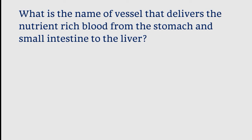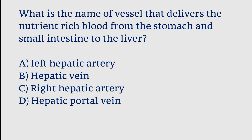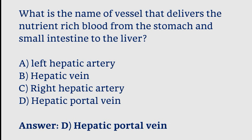What is the name of the vessel that delivers nutrient-rich blood from the stomach and small intestine to the liver? Options: left hepatic artery, hepatic vein, right hepatic artery, hepatic portal vein. The correct answer is option D. The hepatic portal vein delivers nutrient-rich blood to the liver.